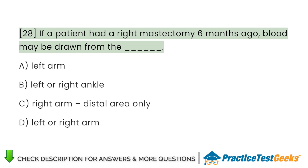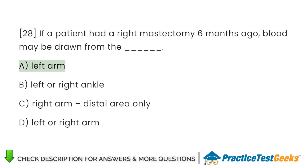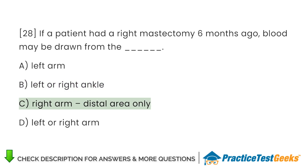If a patient had a right mastectomy six months ago, blood may be drawn from the A. Left arm. B. Left or right ankle. C. Right arm distal area only. D. Left or right arm.